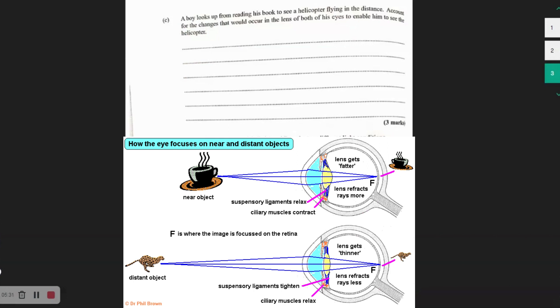So when we are looking at something close, the ciliary muscles are contracted, but these suspensory ligaments are slack or they are relaxed, and the lens becomes fatter.